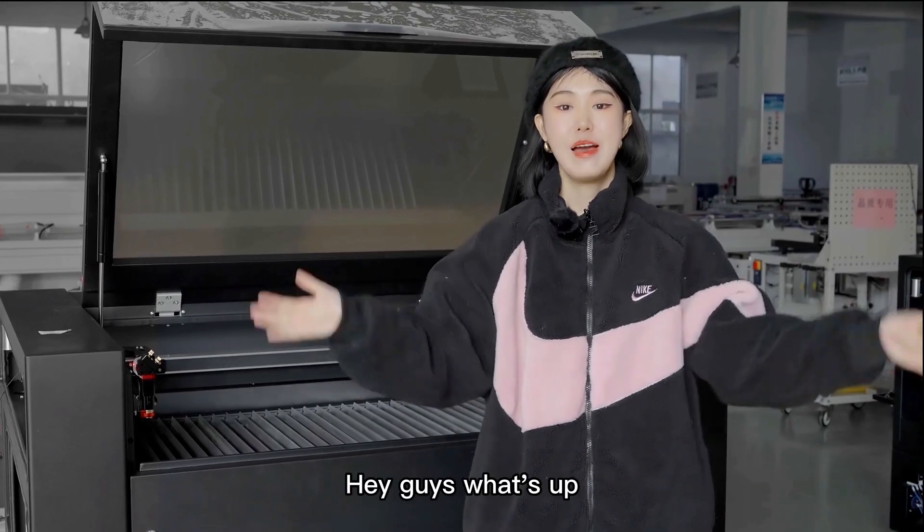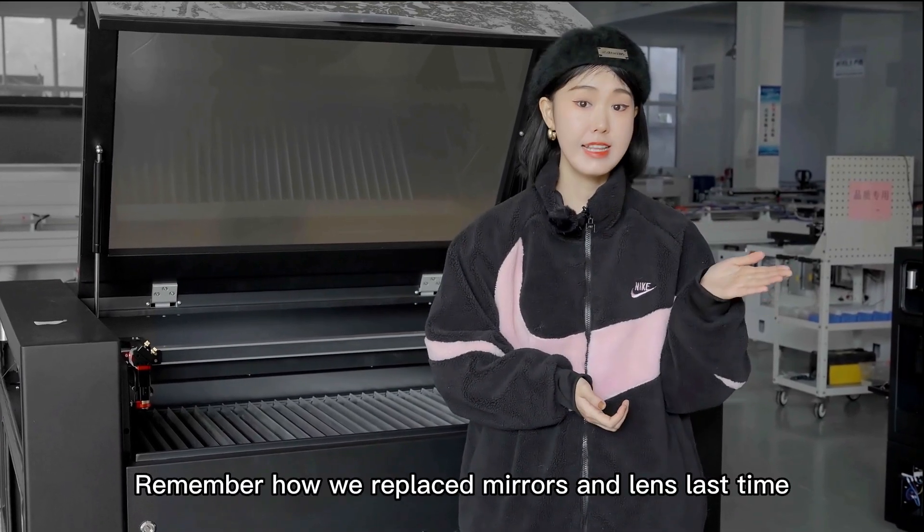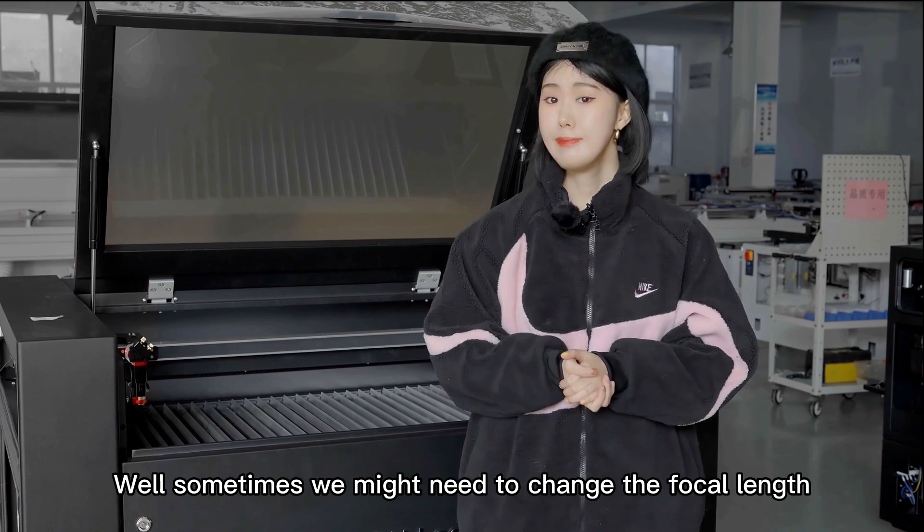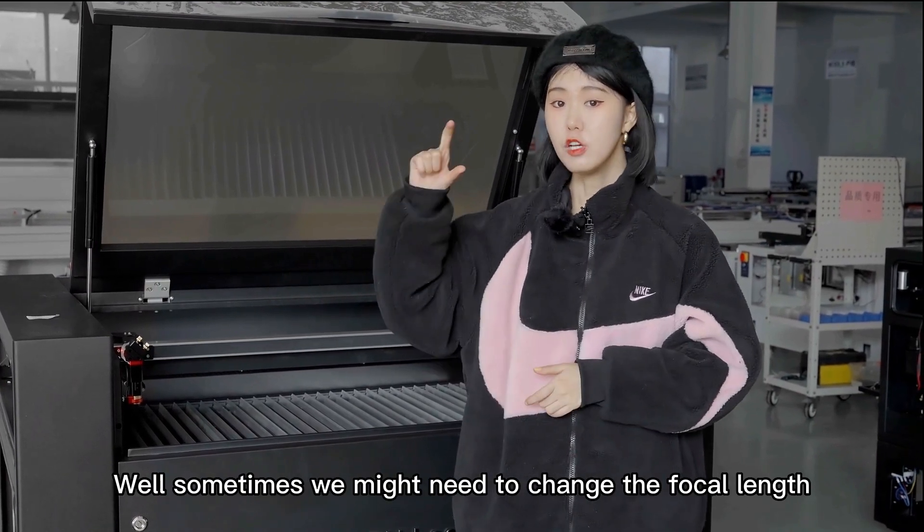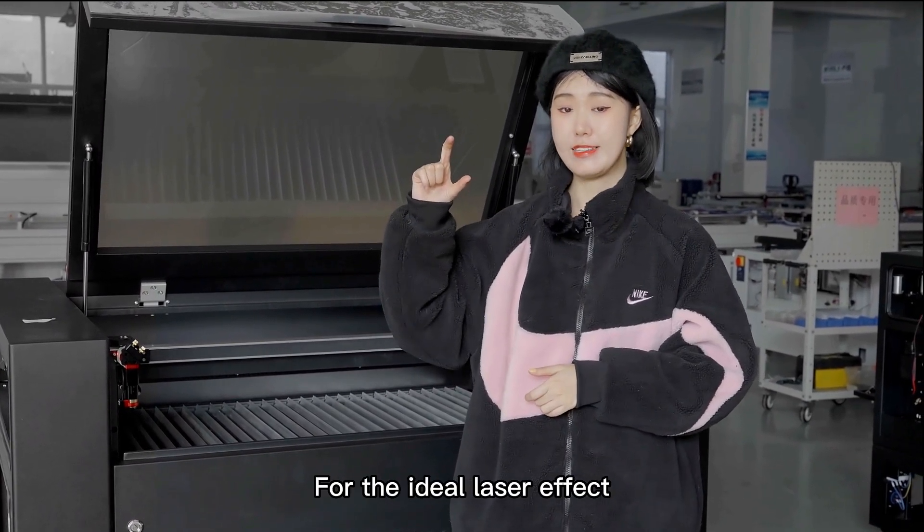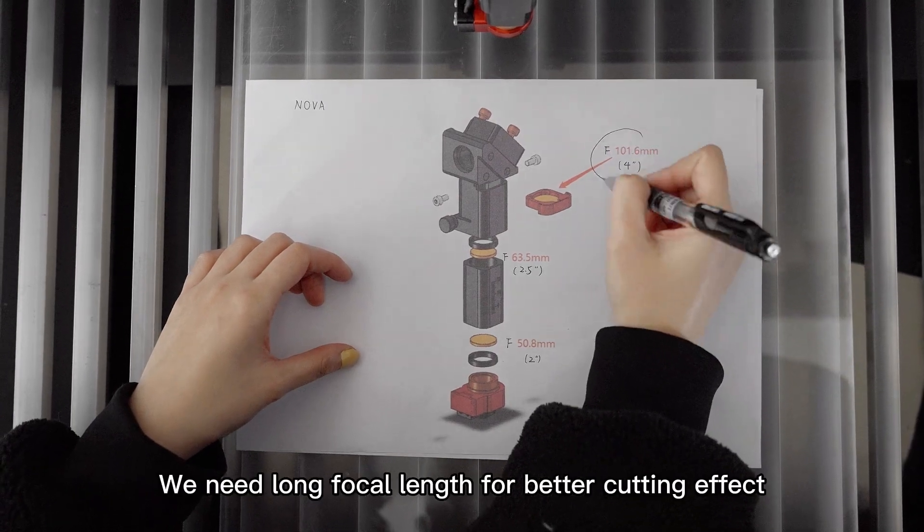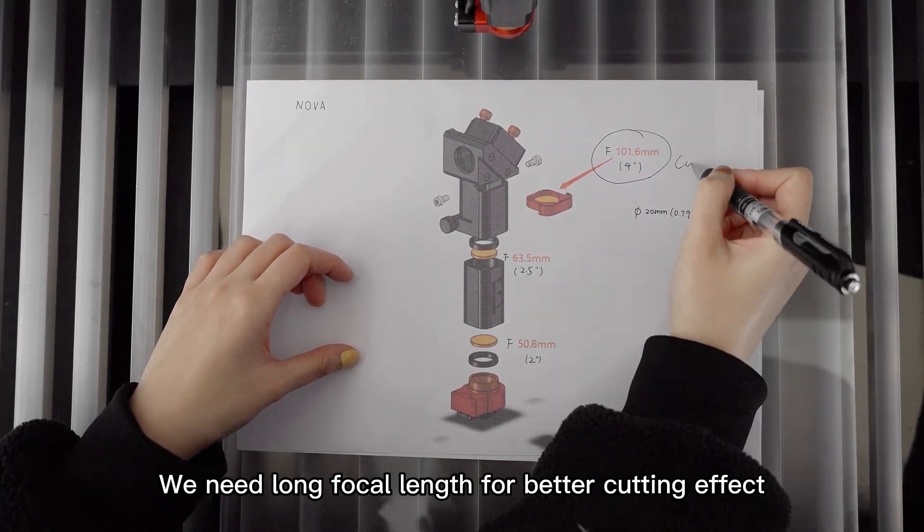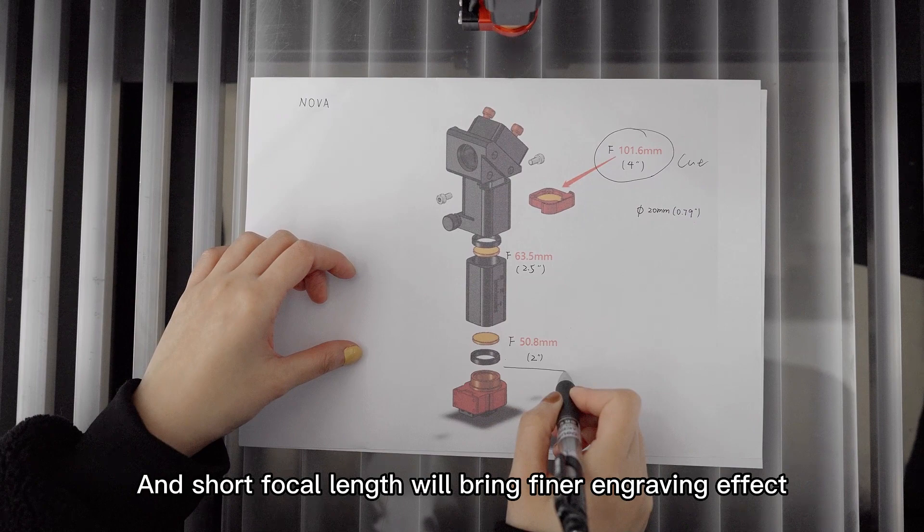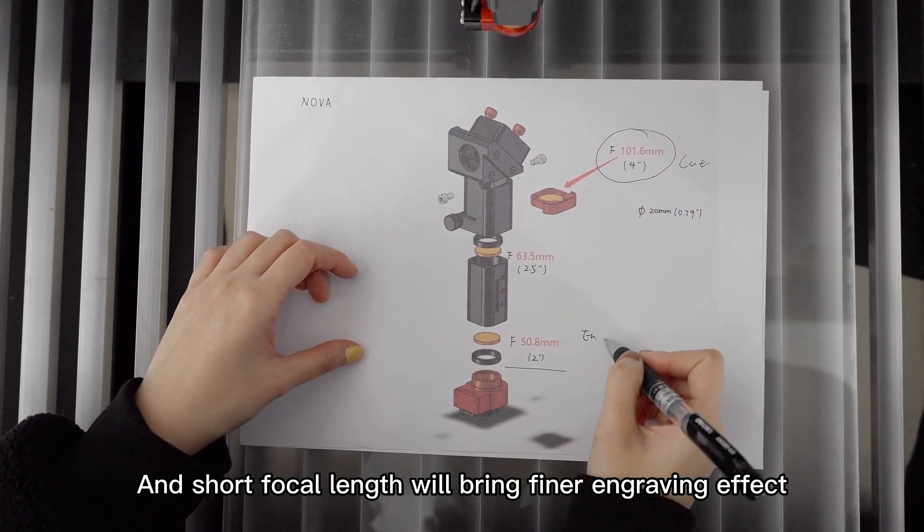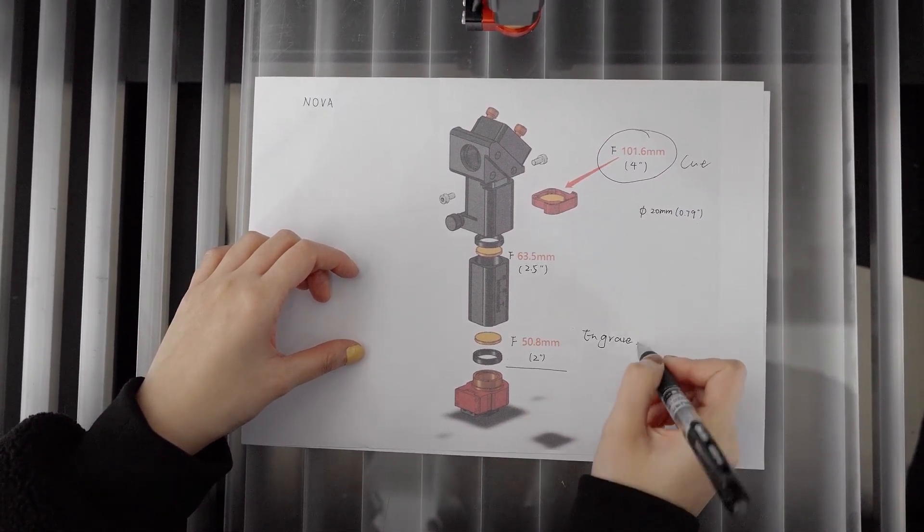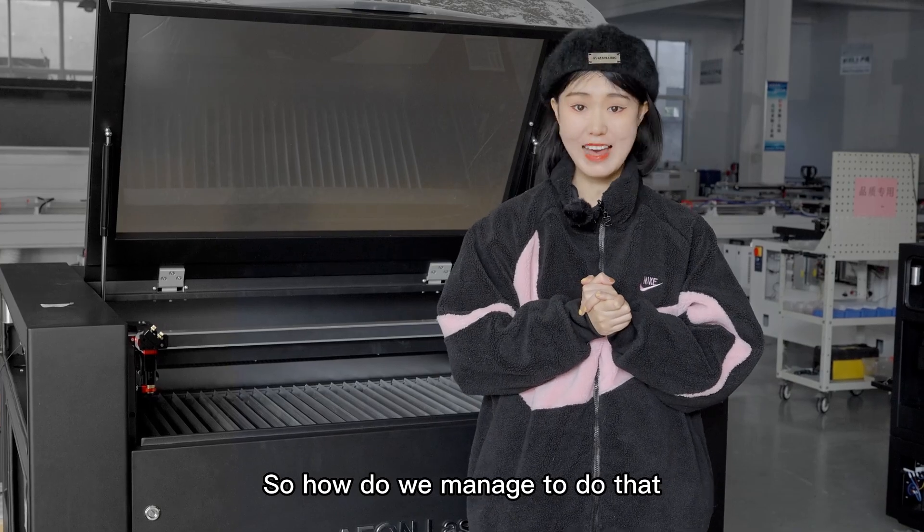Hey guys, what's up? Remember how we replaced the mirrors and lens last time? Well, sometimes we might need to change the focal length for the ideal laser effect. For example, we need long focal length for better cutting effect, and short focal length will bring finer engraving effect. So how do we manage to do that?